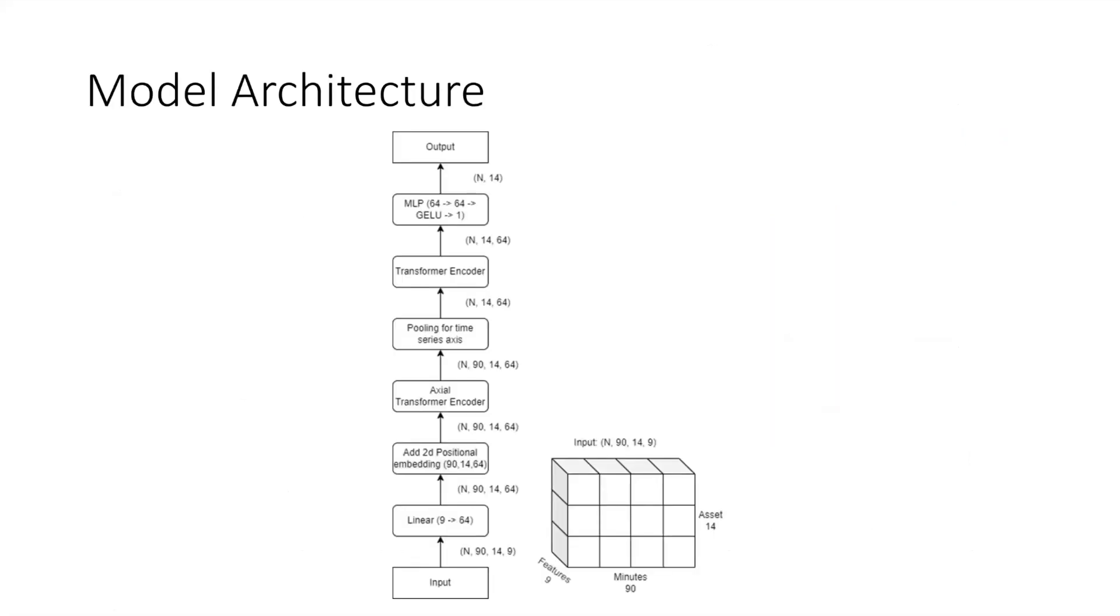This is the architecture of the model, a transformer based model. After the model receives the inputs there will be a linear layer to extend the dimension, then we add two learnable positional embeddings. One is the time series embedding and the other one is the asset embedding. Without them the model has no information on which timestamp and which asset does the node come from because the self-attention layer itself does not handle any positional information.